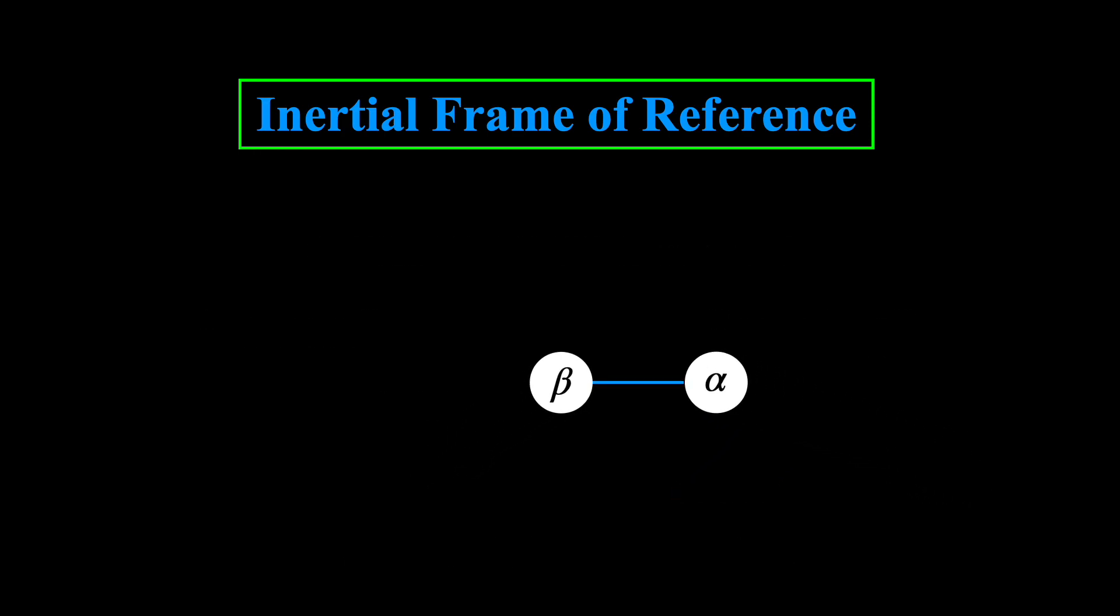The situation becomes much more interesting, however, when we add a third particle. Let's call it gamma. And we'll suppose that both gamma and alpha are orbiting around beta with the same velocity. Now if we ask the question, is alpha at rest or in motion, what is the answer?